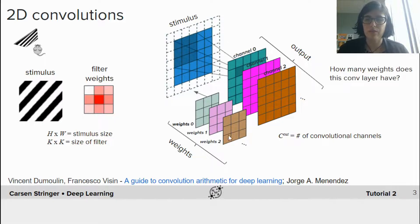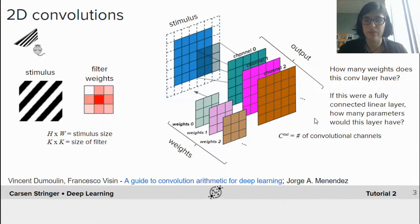And so within your group, you should discuss how many weights does this conv layer have with cout number of convolutional channels. Similarly, you should discuss if this were a fully connected linear layer, how many parameters would this layer have. And you should find that the number of parameters you need for a fully connected linear layer is much more than for a convolutional layer.